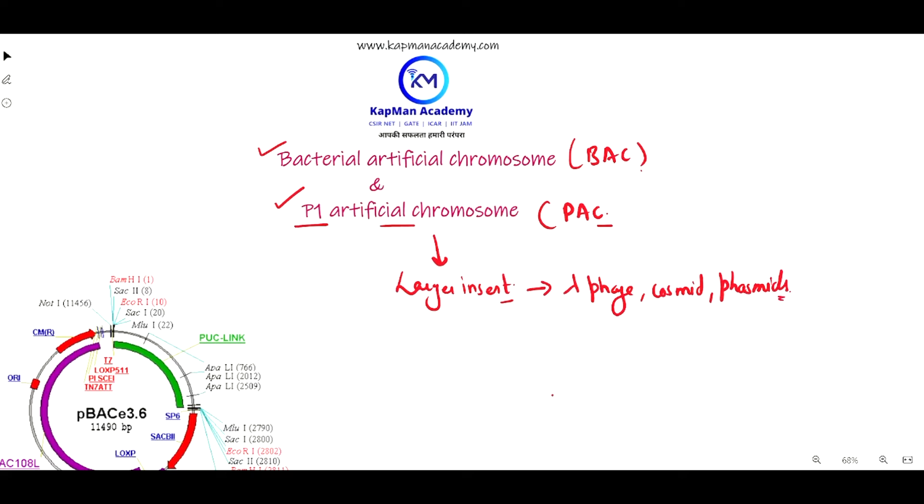If we talk about their structure, BAC cloning vector is derived from plasmids. It contains replication origin known as ORI of E. coli cells and contains F factor which is responsible for the formation of pilus, which enables transfer of plasmid from one cell to another host cell.